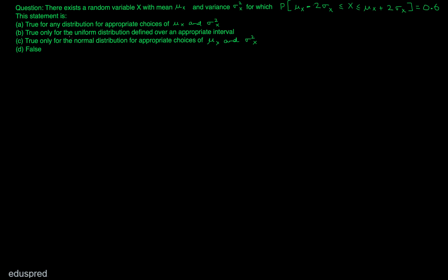In this video, I'm going to solve this question: There exists a random variable X with mean μx and variance σ²x for which the probability that X lies between μ minus 2σ and μ plus 2σ is equal to 0.6.